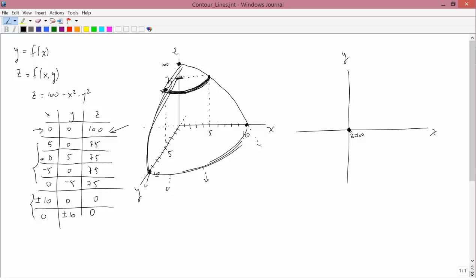It's a circle with radius five. So on the right-hand diagram, one, two, three, four, five, what I'd have is a circle with radius five. And those are all the points where z equals 75.